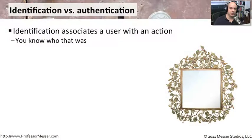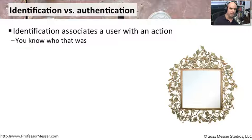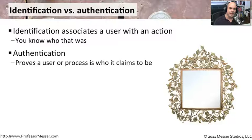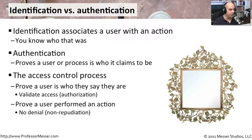If you're going to gain access to resources on a network, you're going to need to identify yourself and authenticate yourself — and these are two different things. Identification is associating a particular user with an action, tracking who's doing what on the network. Authentication is proving that a user is who they say they are. Without authentication — such as a passphrase or smart card — you could be anybody, so we need this process to know who's using the network.